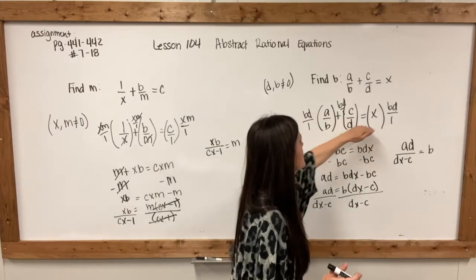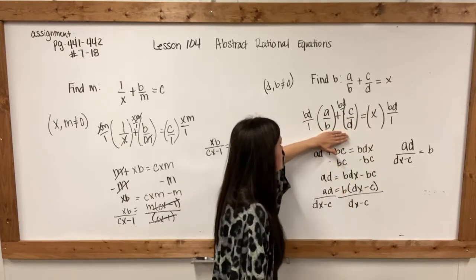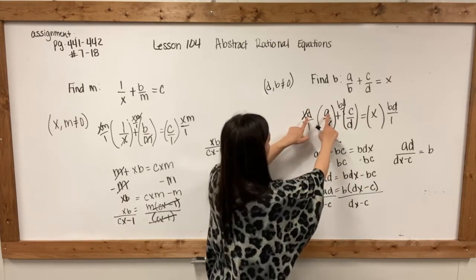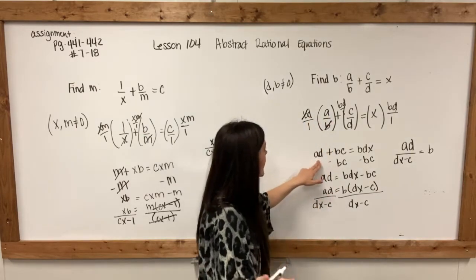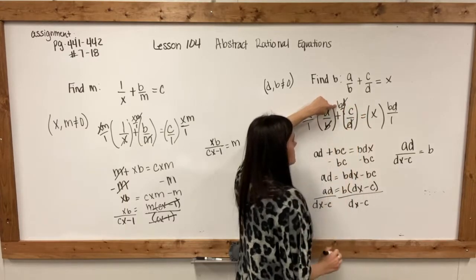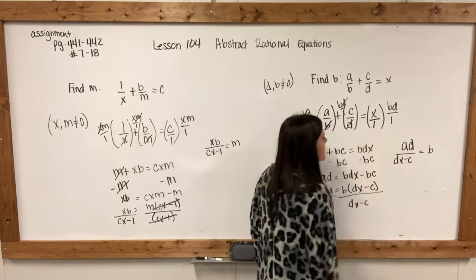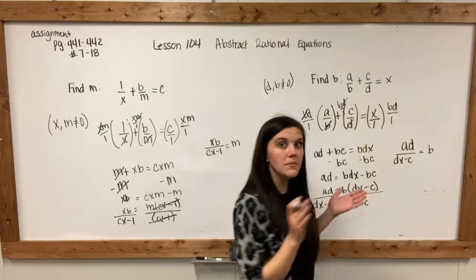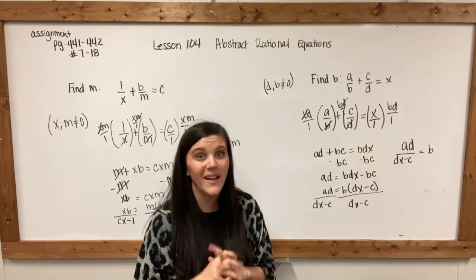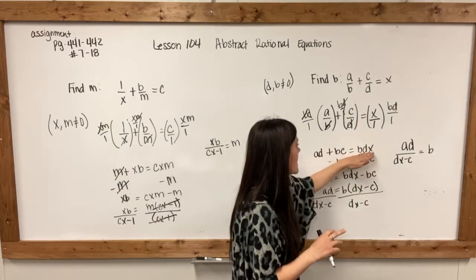I'm going to multiply all of these fractions by bd. When I multiply a/b by bd, the b's cancel out and I'm left with ad. For the next one, bd/1 times c/d — the d's cancel out and I'm left with bc. For the last one, I put x over 1, and there's nothing to cross simplify, so I end up with bdx. So now I have ad + bc = bdx.